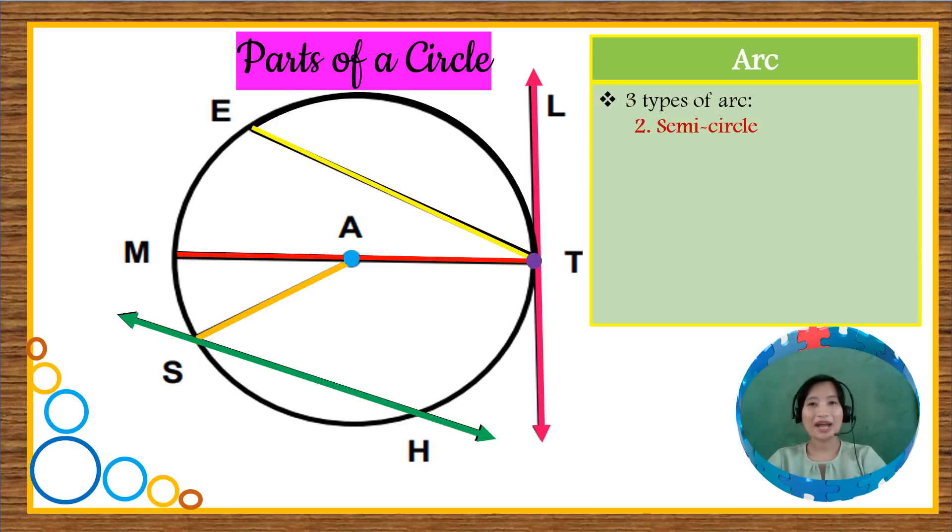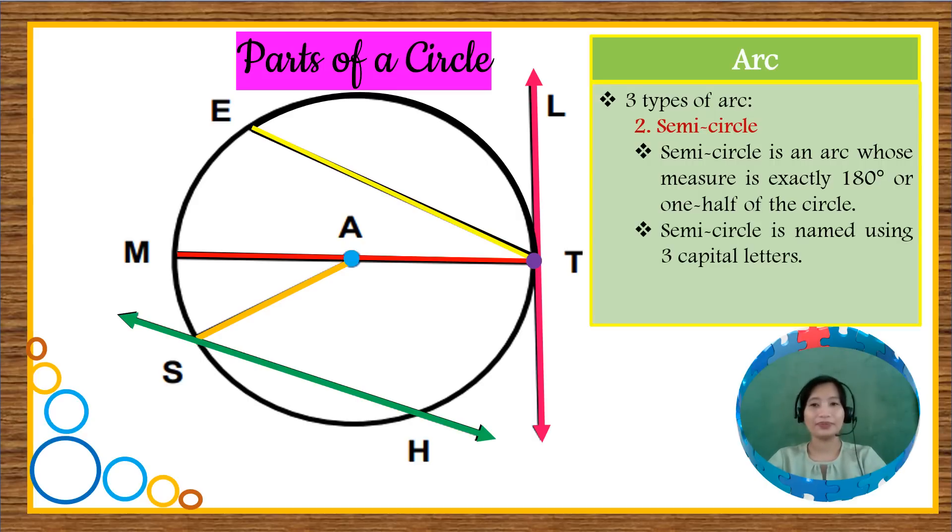The second type of an arc is the semi-circle. It is an arc whose measure is exactly 180 degrees or one half of the circle. For this one, it is named using three capital letters. For example, if we have here this arc, this arc is named as arc M-E-T and it is a semi or semi-circle arc.